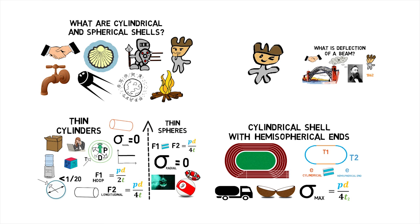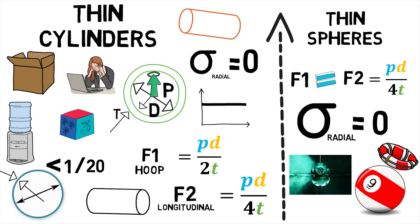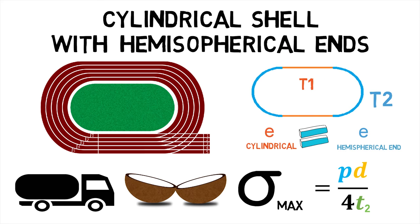Hence, we first saw how thin cylinders and spheres behave due to internal pressure and then went on to see how cylindrical shell with hemispherical ends act under internal pressure.